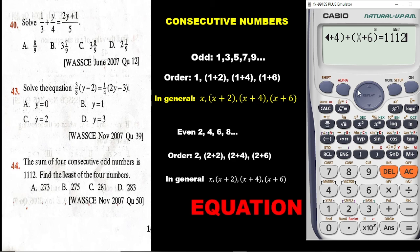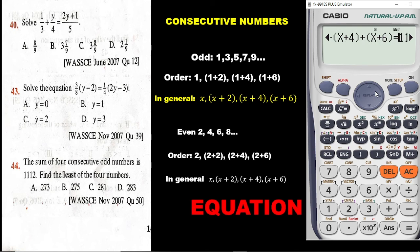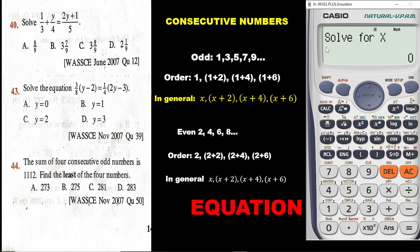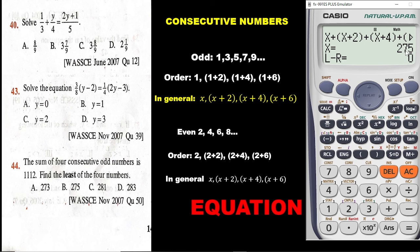Now to solve, press shift then the solve button. For equations, enter 0 when prompted. Press 0 then equals. The least number is 275. Going through the answer options, we are getting 275 as option 2. And this is how easy you can use your calculator to solve questions involving equations.